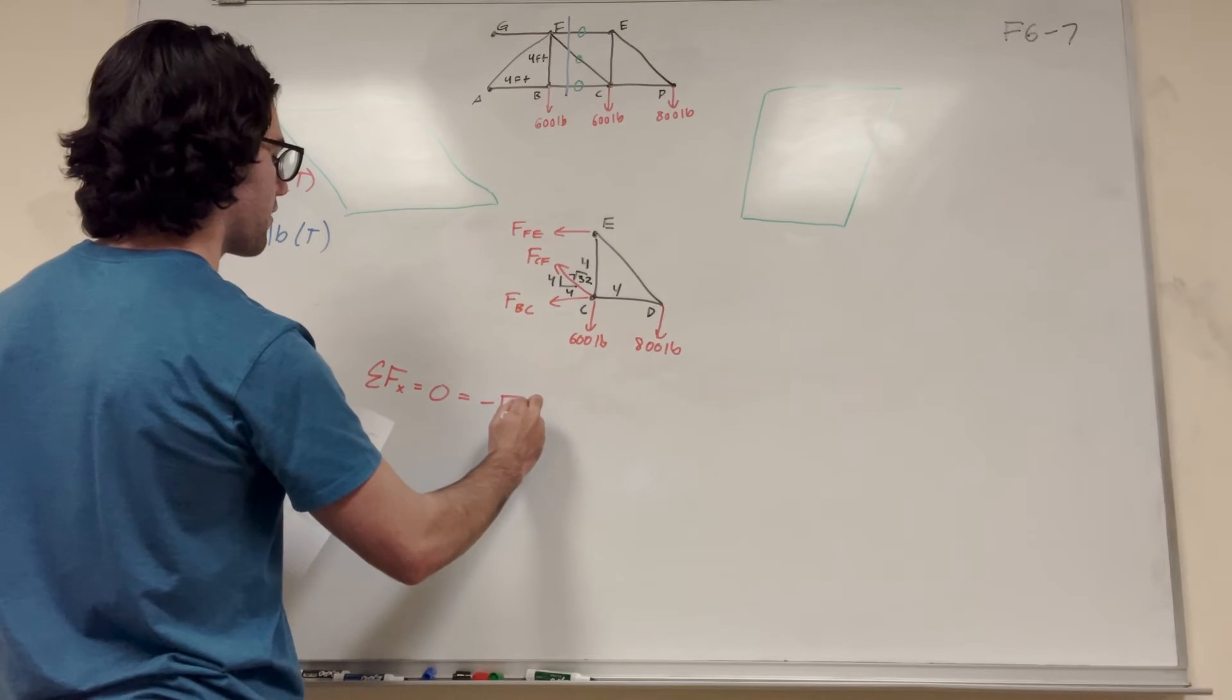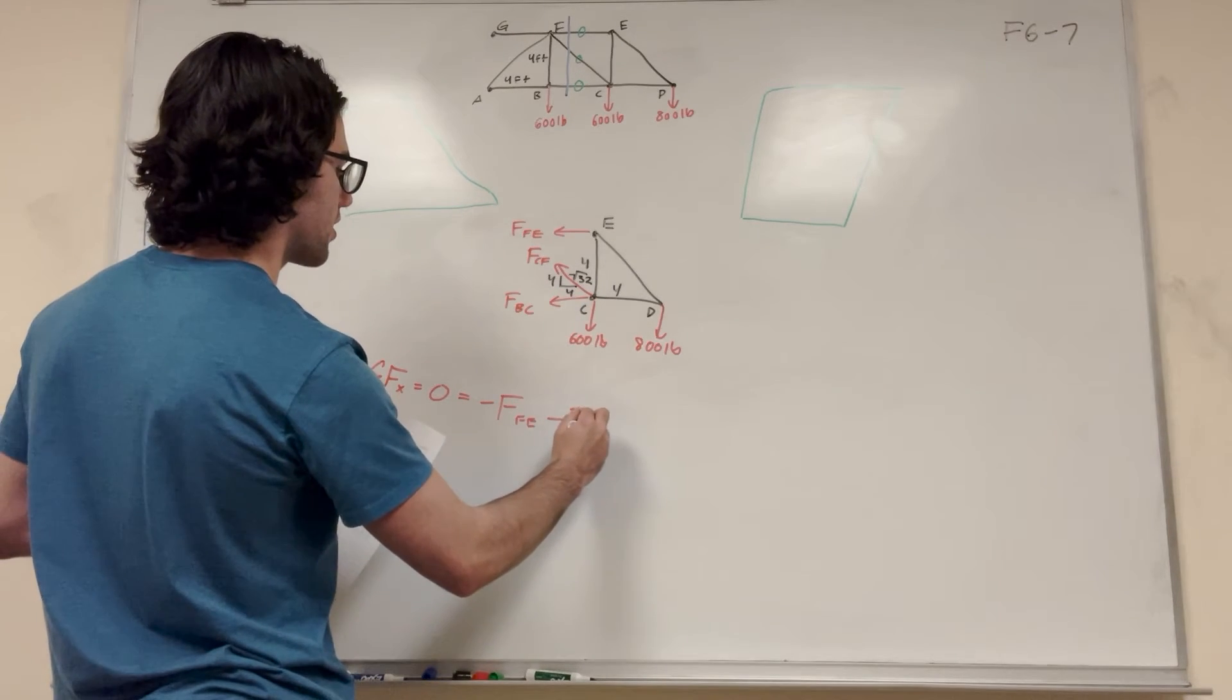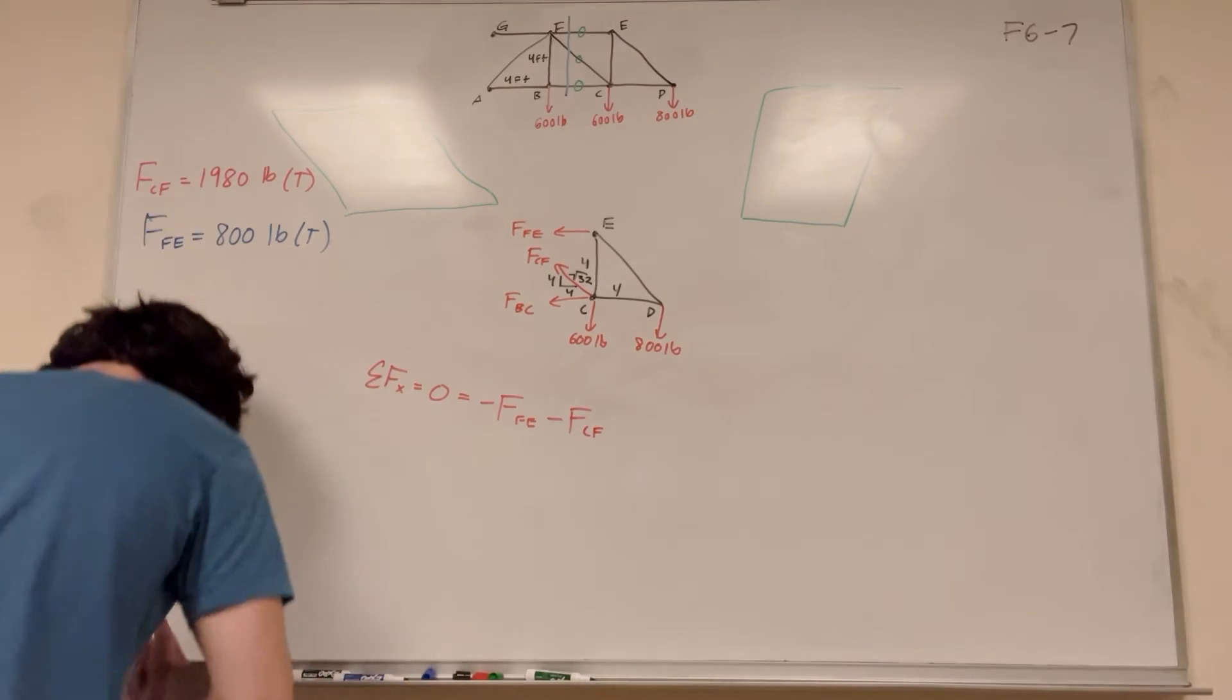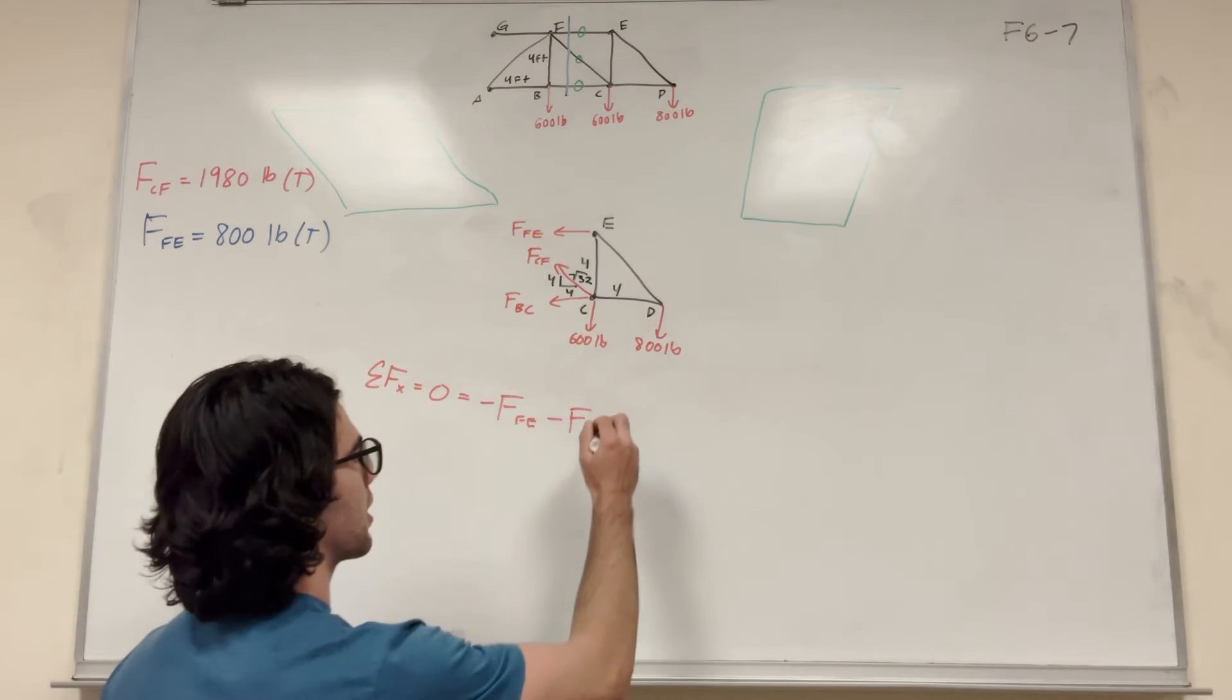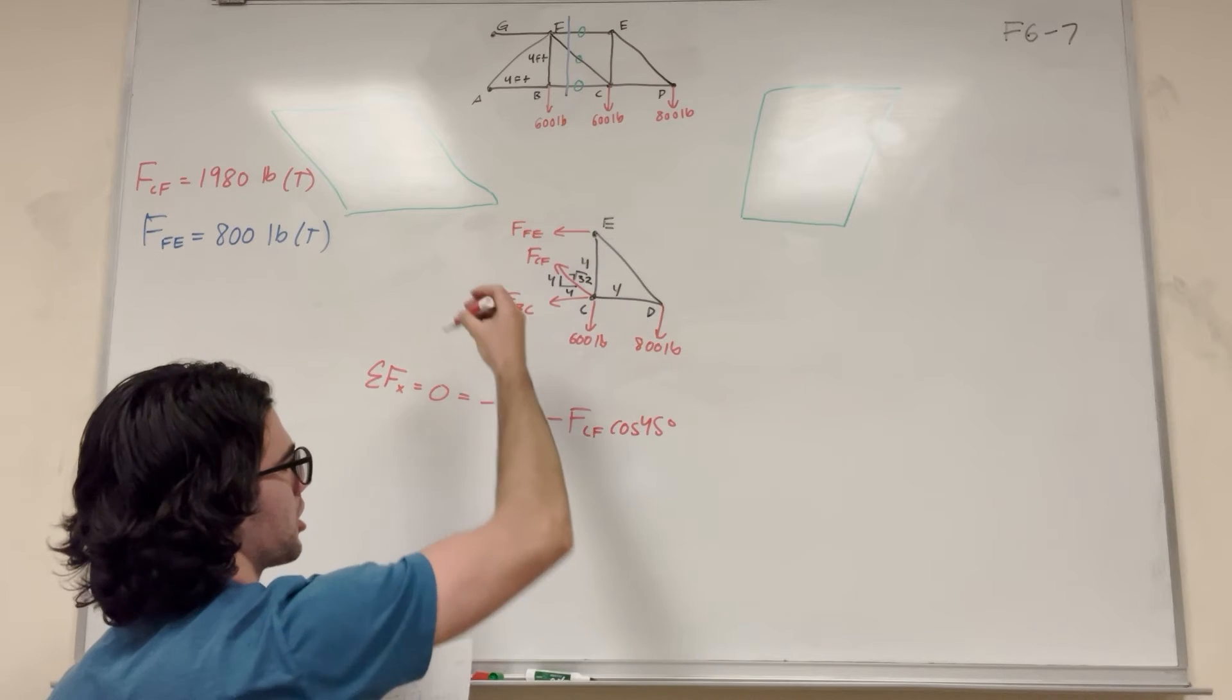So we have negative FE minus FCF. So FCF only acts at a cosine 45 degree angle, right? Because it only acts so much that way.